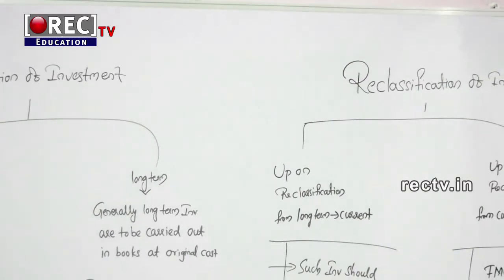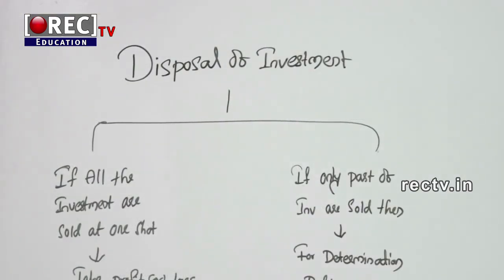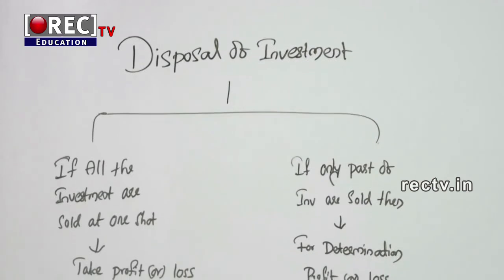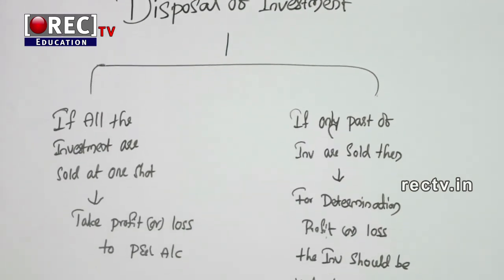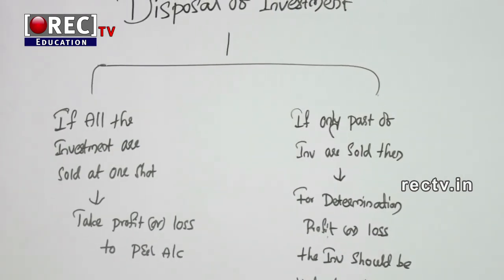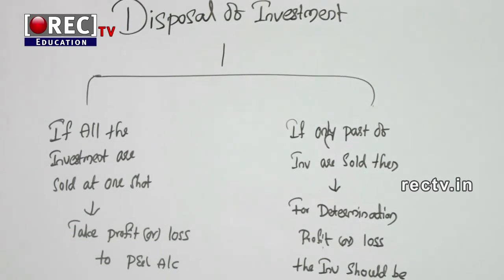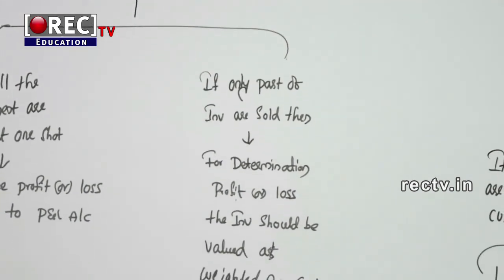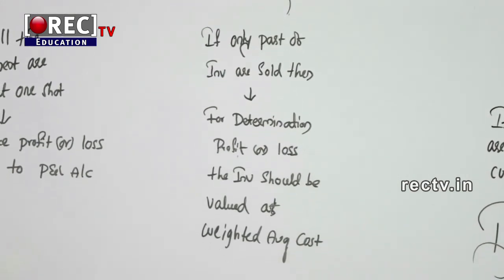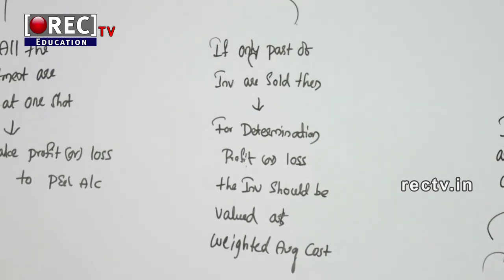For disposal of investment: if all investments are sold at once, take the profit or loss to the P&L account. When only part of the investments are sold, the investment should be valued at weighted average cost for determination of profit or loss.